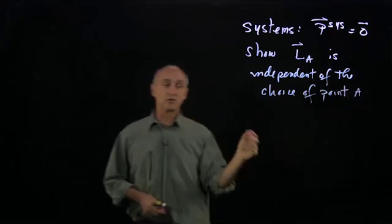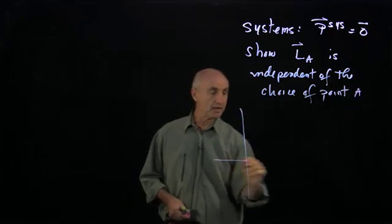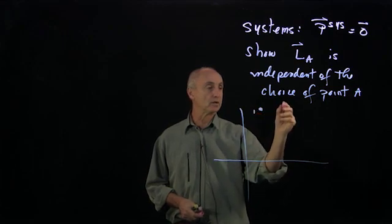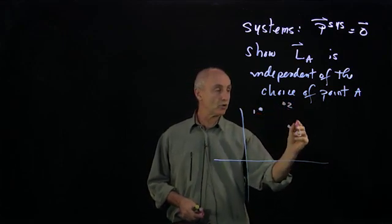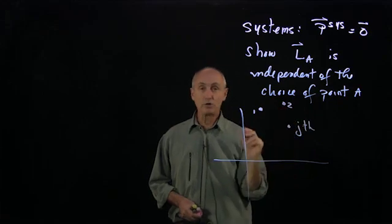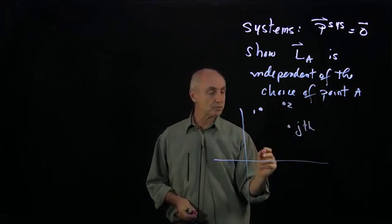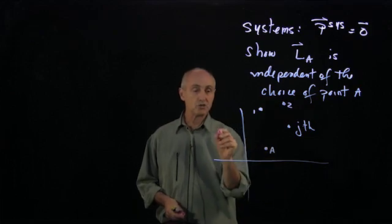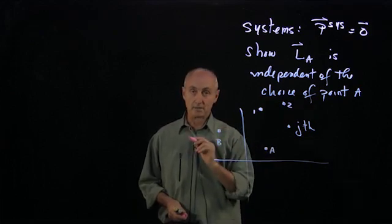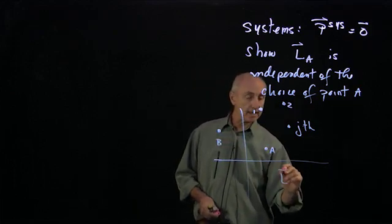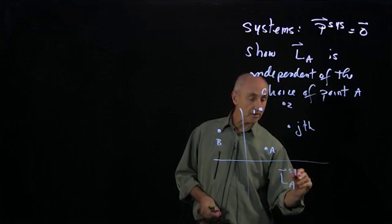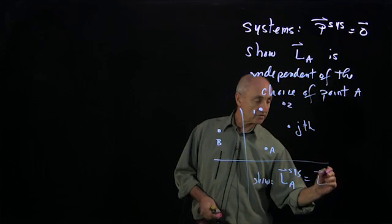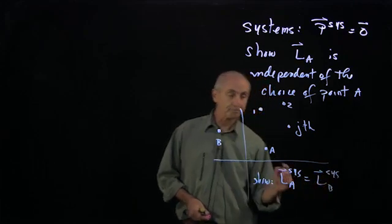Let's draw a picture here. Let's make our system a bunch of discrete particles: particle 1, particle 2. Let's call this the j-th particle. And let's choose a point A right here, and a point B right there. I'll show that L for this system about A is going to be equal to L of the system about B.